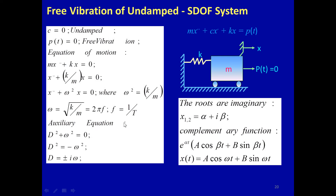From the mathematics of the auxiliary equation: D² + ω² = 0, so D² = −ω², giving D = ±iω, where i is the imaginary unit. Since the roots are imaginary, the solution x(t) takes the form of the complementary function: x(t) = e^(αt)[A cos(βt) + B sin(βt)]. Substituting α = 0 and β = ω gives x(t) = A cos(ωt) + B sin(ωt) as the displacement component.